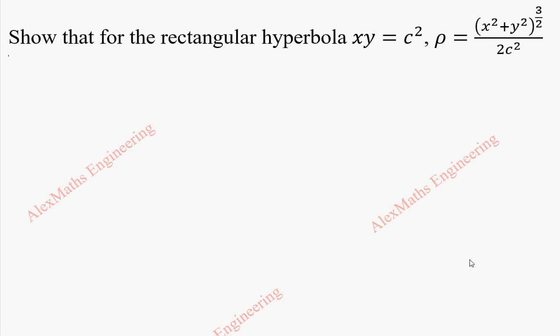Hi students, this is Alex here. In this video we are going to show that for the rectangular hyperbola xy equal to c square, the radius of curvature is x square plus y square, whole power 3 by 2, divided by 2c square.